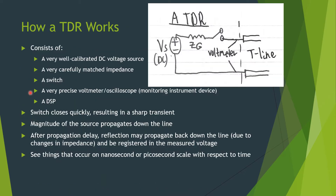A TDR consists of a very well calibrated DC voltage source, a very carefully matched impedance, a switch, a very precise voltmeter, and a DSP.